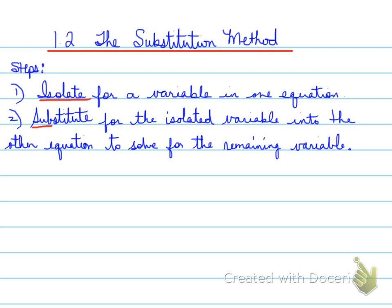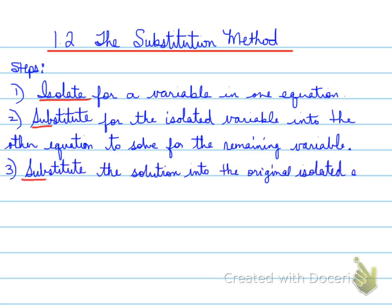The third step is sub again. You substitute the solution that you found in step two into the original isolated equation. Here's a very important point: you must use the original equations given. If you make an error in the isolation step and substitute back into that wrong equation, your answer will be wrong, and you've substituted a wrong answer into an equation that was wrong to begin with. So if you isolate in one, you sub in two, and then you sub back in one again — always the opposite of what you did before.